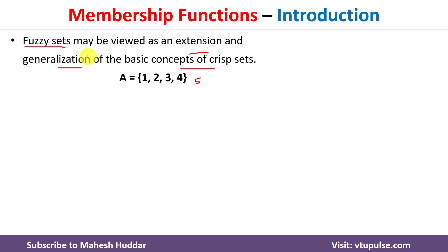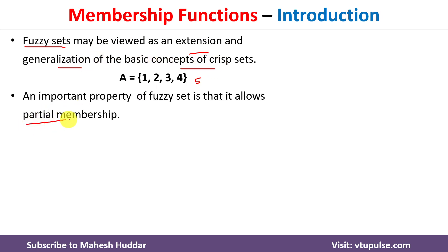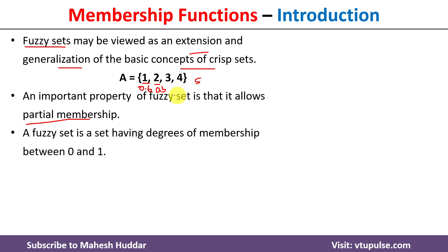In a fuzzy set, the extension or generalization is given for this concept with the help of something known as partial membership. For each element, rather than assigning either zero or one, we can assign a partial membership value. For example, element one can have a membership value of 0.6, meaning it is present 60% of the time. Element two can have 0.3, meaning it is present 30% of the time. This is known as the degree of membership, and it ranges between 0 and 1.